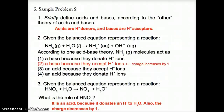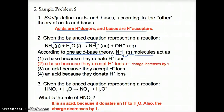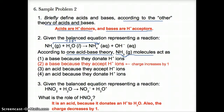Sample Problem 2: According to the Bronsted theory, acids are H+ donors and bases are H+ acceptors. For NH3 going to NH4+: NH3 gains a hydrogen ion going from three hydrogens to four, and goes up in charge from zero to +1. Since it gains or accepts hydrogen ions, NH3 is a base in this example — it accepts H+ ions to go from NH3 to NH4+.